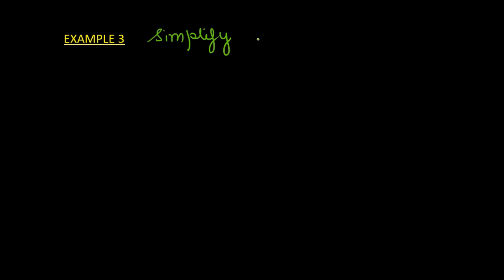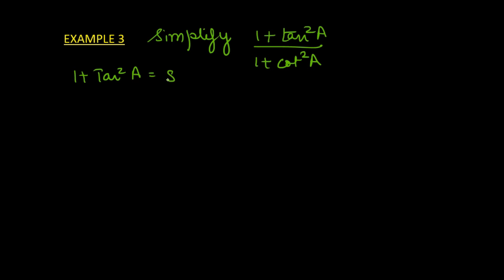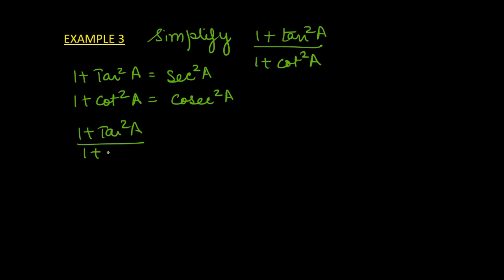Simplify (1 + tan²A) over (1 + cot²A). Now, 1 + tan²A by the identity we know equals sec²A. And 1 + cot²A can be written as cosec²A. So in place of (1 + tan²A) over (1 + cot²A), we can write sec²A over cosec²A.